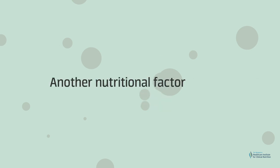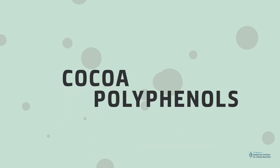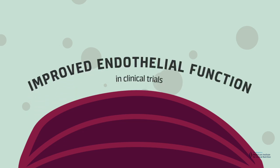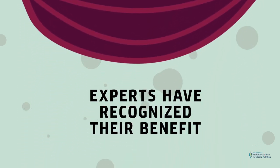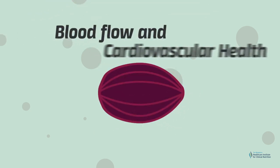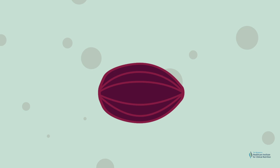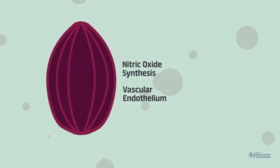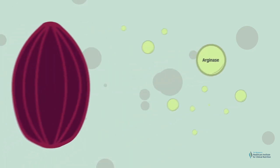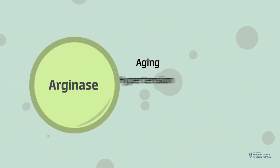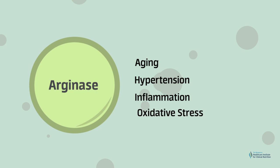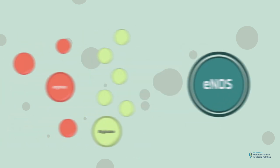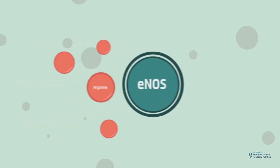Another nutritional factor that contributes to endothelial function is cocoa polyphenols. Cocoa polyphenols have been strongly linked with improved endothelial function in clinical trials, and experts have recognized their benefit for endothelial function, blood flow, and cardiovascular health. Cocoa polyphenols protect nitric oxide synthesis and the vascular endothelium in many ways; for example, they can inhibit the enzyme arginase. Arginase increases in aging, hypertension, inflammation, and oxidative stress, and can divert arginine away from nitric oxide synthesis. By downregulating arginase activity, cocoa polyphenols can protect endothelial function.